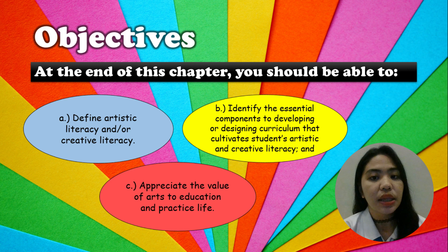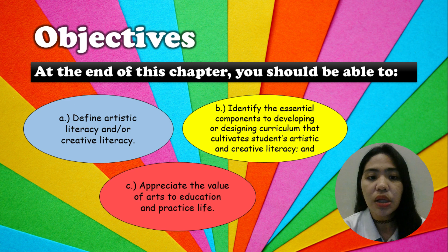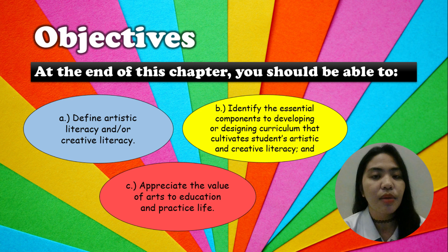Our objective states that at the end of this chapter you should be able to: (a) define artistic literacy and/or creative literacy, (b) identify the essential components of developing or designing curriculum that cultivates students' artistic and creative literacy, and (c) appreciate the value of arts to education and practice in life.